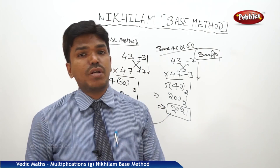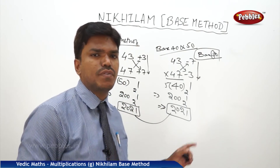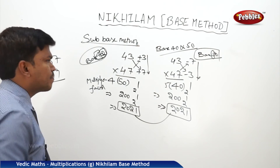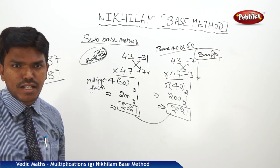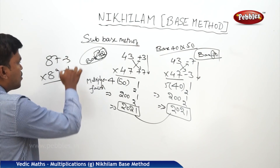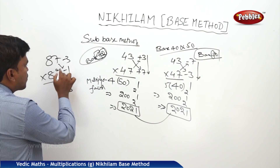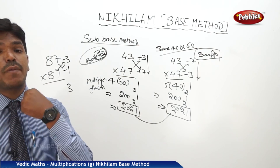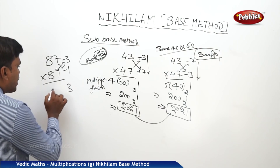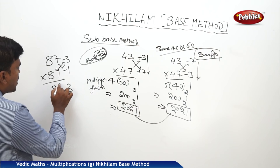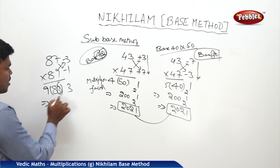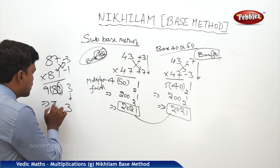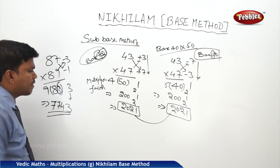One more example: 87 into 89. They are closer to 90 so take base 90. It is minus 3 and minus 1. 3 times 1 is 3 — no padding needed for the right side. Cross subtraction: 87 minus 1 or 89 minus 3, both give 86. Multiply 86 by the multiplication factor 9: 86 times 9 is 720 plus 54 equals 774. So the answer is 7743.